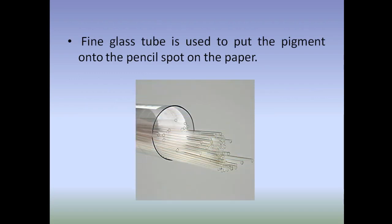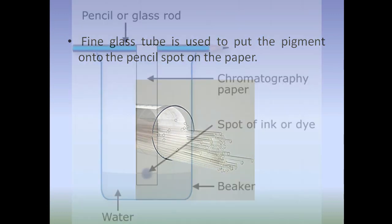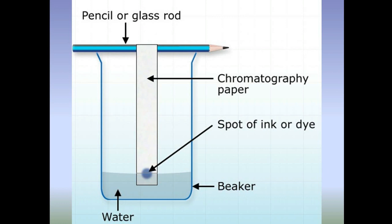A fine glass tube, like a capillary, is used to put the pigment onto the pencil spot on the paper. The dot should be as small as possible — then only the component separation will be neat and clear.